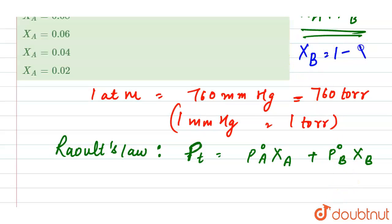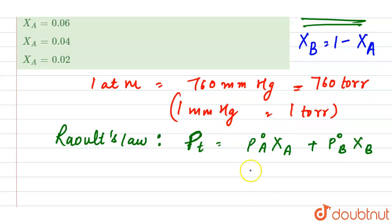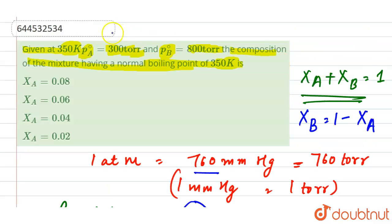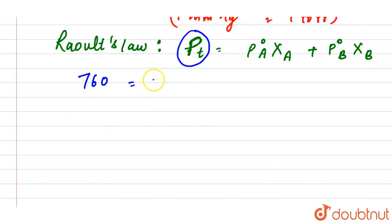Now we are given the total pressure as 760. So 760 equals P⁰_A, which is 300, times X_A, plus P⁰_B, which is 800, times X_B. We can write: 760 = 300X_A + 800(1 - X_A).